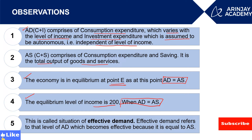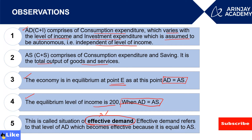The situation at which aggregate demand equals aggregate supply is called effective demand. At that level, aggregate demand becomes effective because it equals the aggregate supply.